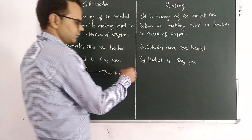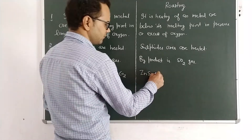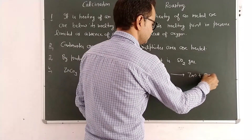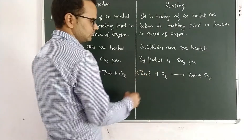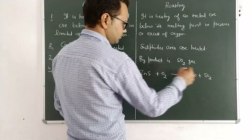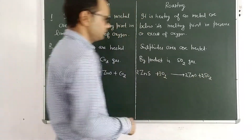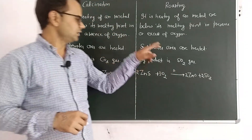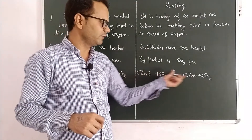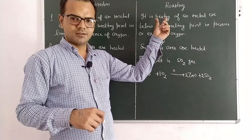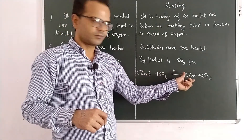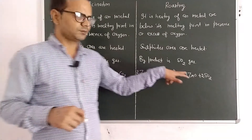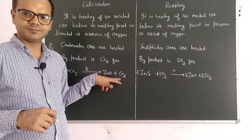For roasting, the example is heating zinc sulphide (ZnS) in the presence of oxygen. As a result we get zinc oxide (ZnO). So in roasting, sulphide ores are converted into metallic oxides. A similarity is that in both processes metallic oxides are produced. The difference is the byproduct: in calcination it is CO₂, and in roasting it is SO₂.